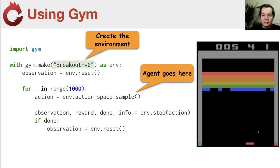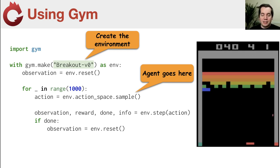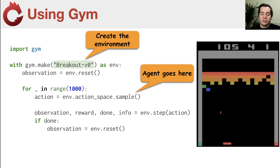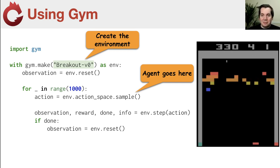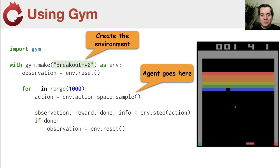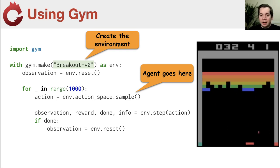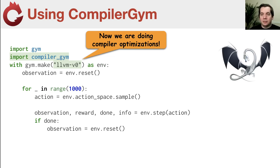Let's look at a code example for how you interact with the gym. Starting with the Atari Breakout environment: you construct an environment instance, get an observation, and step through it. A step takes a particular action; after every action you get a new observation, new reward, and the environment tells you whether you're done. Here we're just picking a random action at every step — but that's where you'd plug in a DQN or deep reinforcement learning approach. We built CompilerGym so you can just change the environment name to LLVM, and now your code is manipulating a compiler.